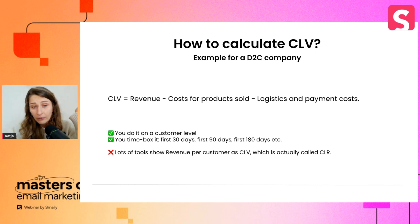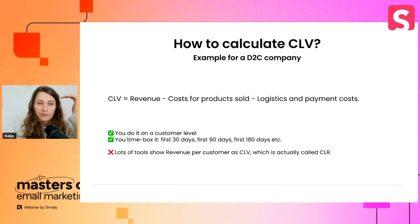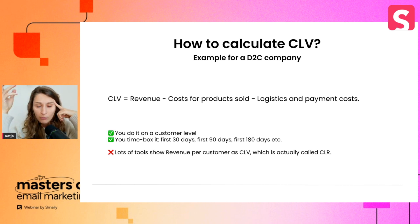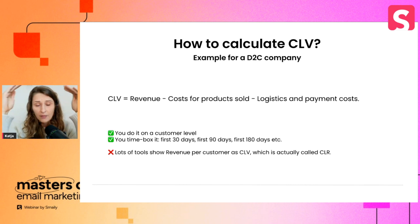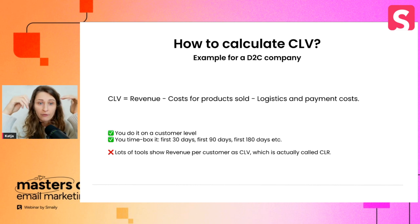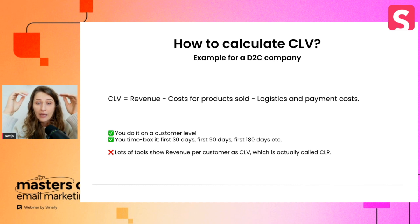If we don't know how to calculate CLV, we can't analyze it and understand what it means. This is an example for a direct-to-consumer e-commerce company. CLV starts with your revenue, then you subtract costs of products sold — all the costs you pay the factory to produce the product — and then you subtract logistics and payment costs. Logistics costs cover the warehouse: someone picks and packs it and then ships it.